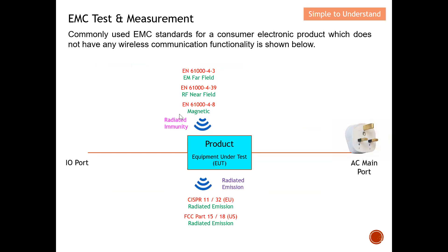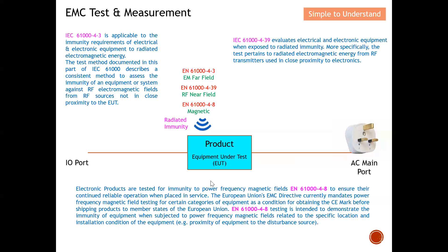For this Part 48 series, I mainly want to concentrate on Radiated Immunity (RI) and Radiated Emission (RE). Under radiated immunity we have three tests to kick off the discussion, and after that we will move to radiated emission.